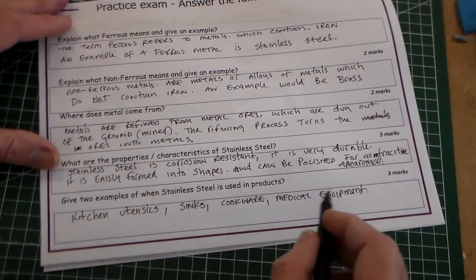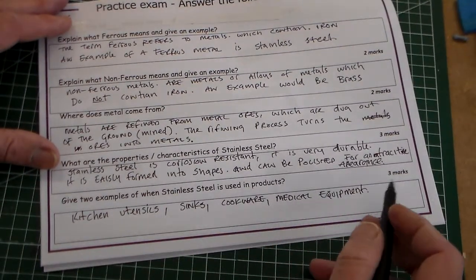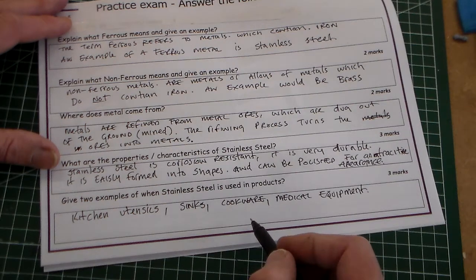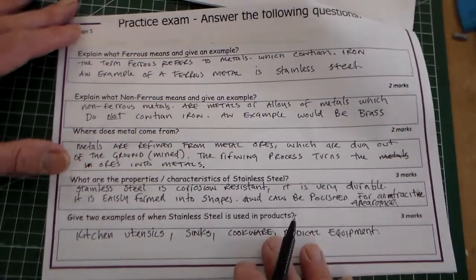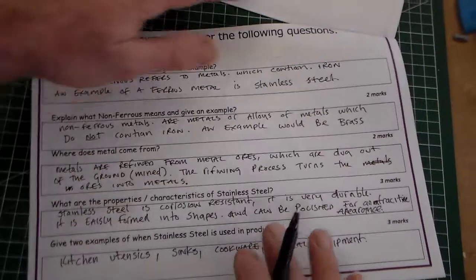One, two, three, there's four, and I needed three because it said there's three marks there. So I've actually given four. So there we've got that. That was question five, and that was on metals.